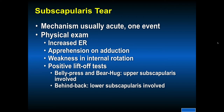Subscapularis tears can occur in association with instability. This is an internal rotator of the shoulder and an often forgotten part of the rotator cuff. The external rotators are the SIT muscles — supraspinatus, infraspinatus, and teres minor. The subscapularis is located in the front of the shoulder. Differential diagnosis of anterior shoulder pain should include involvement of the subscapularis, whether it's tendinopathy, strain, partial tear, or tear. The mechanism is usually an acute one-event injury. On physical exam there is increased external rotation, apprehension on adduction, weakness in internal rotation, and positive lift-off tests. The belly press and bear hug indicate upper subscapularis involvement; the behind-the-back or half-nelson indicates lower subscapularis involvement.